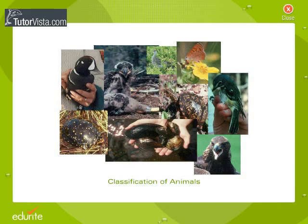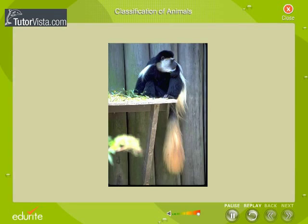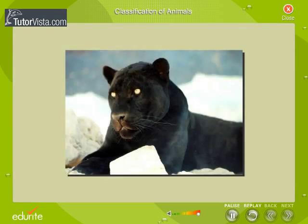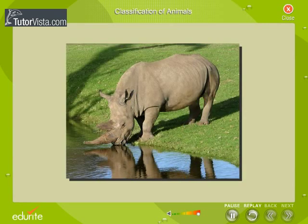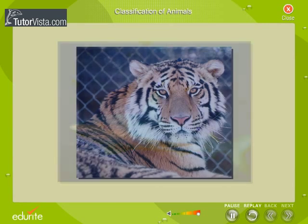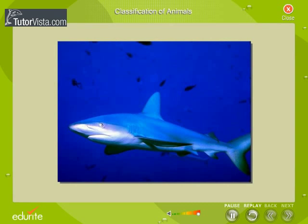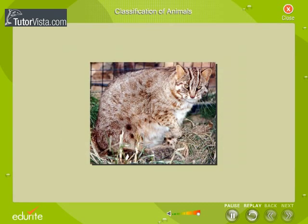Classification of Animals. Animals form the highest population of organisms on Earth. There are about 12 lakh known species on the Earth. Animals are classified based on the features which are of great variety.